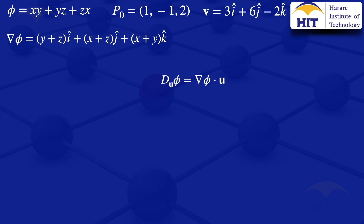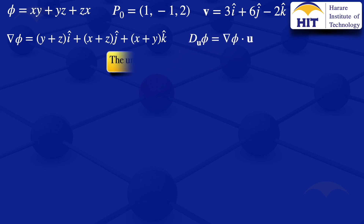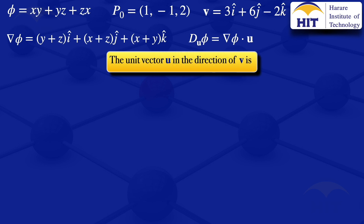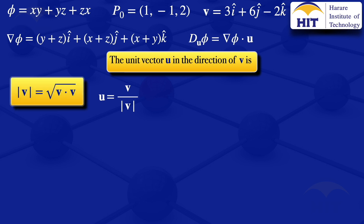We need the unit vector in the direction of vector v. For that unit vector, we divide v by its norm. The norm of v is the square root of the dot product of v with itself. Our v is 3i + 6j - 2k, so the norm is the square root of 3² + 6² + (-2)².